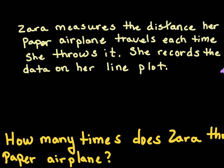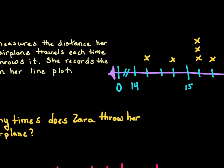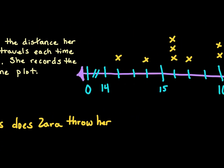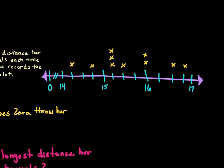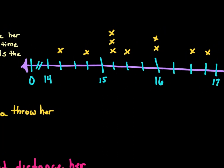Here's our first problem. Zara measures the distance her paper airplane travels each time she throws it. She records the data on her line plot. Our line plot looks like this.